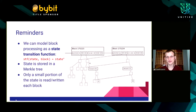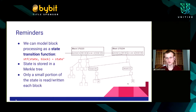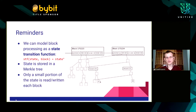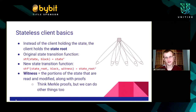The state does change, but the number of hashes you need to recompute is much smaller. For every one update you make, you only have to make O(log n) changes to the hash data structure. If a block reads one account, you only need log n hashes because that's just the Merkle proof.